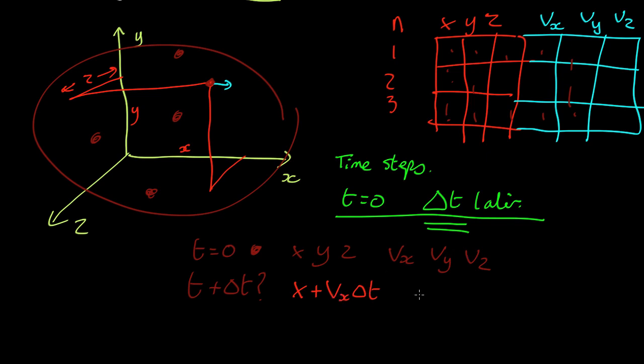Likewise the new y is going to be the old value of y, plus the y velocity times delta t. And the new value of z is going to be the old value plus z velocity times delta t.